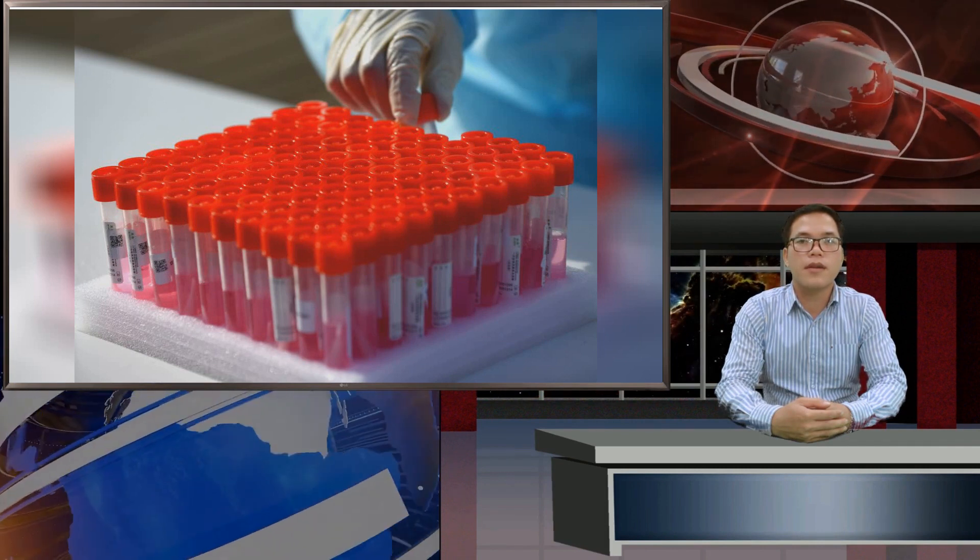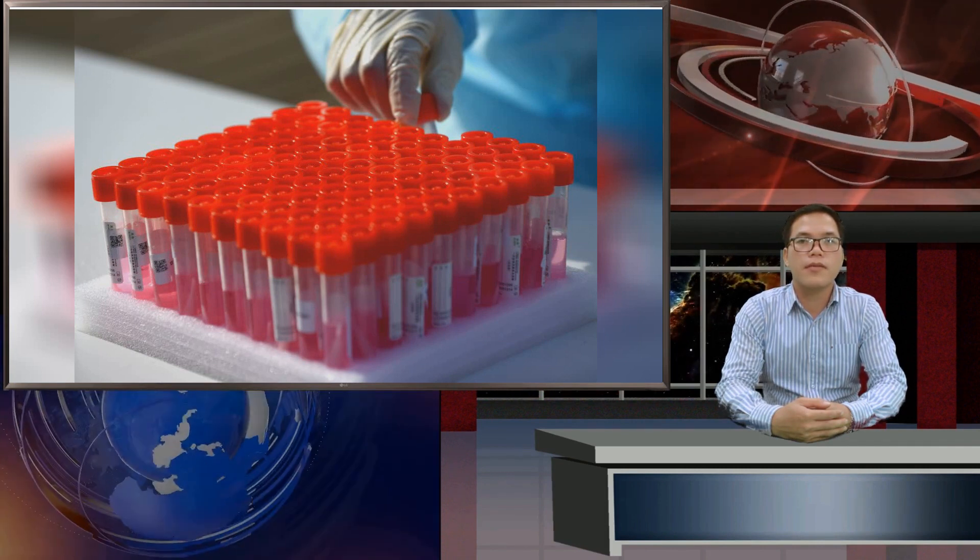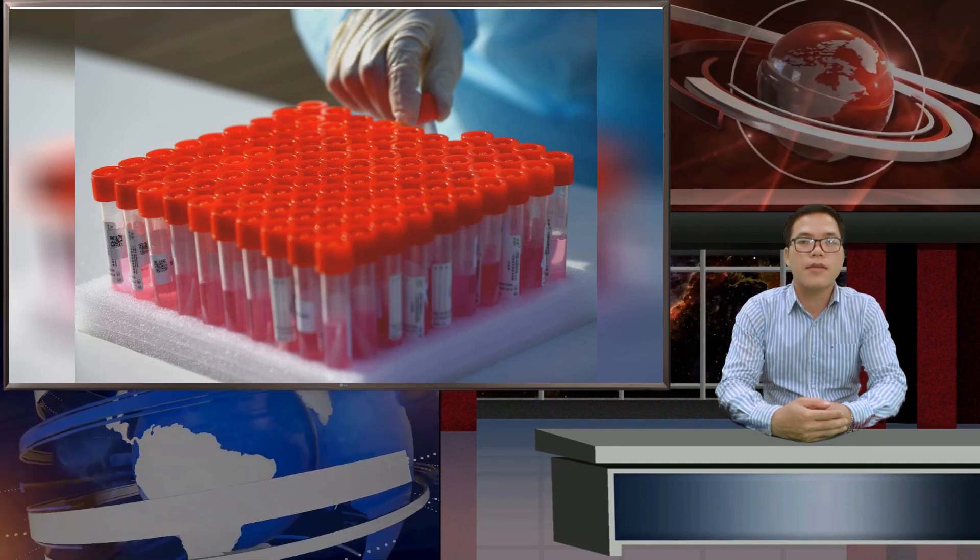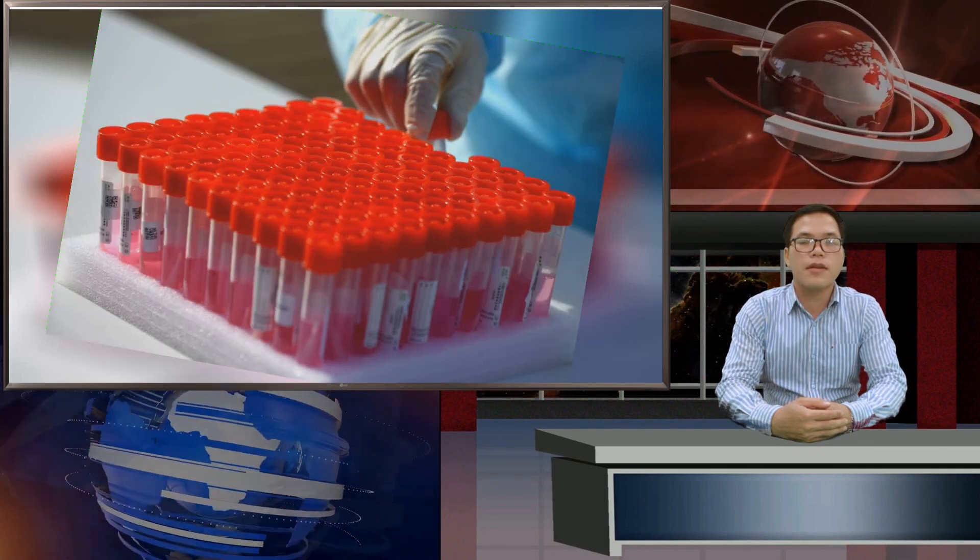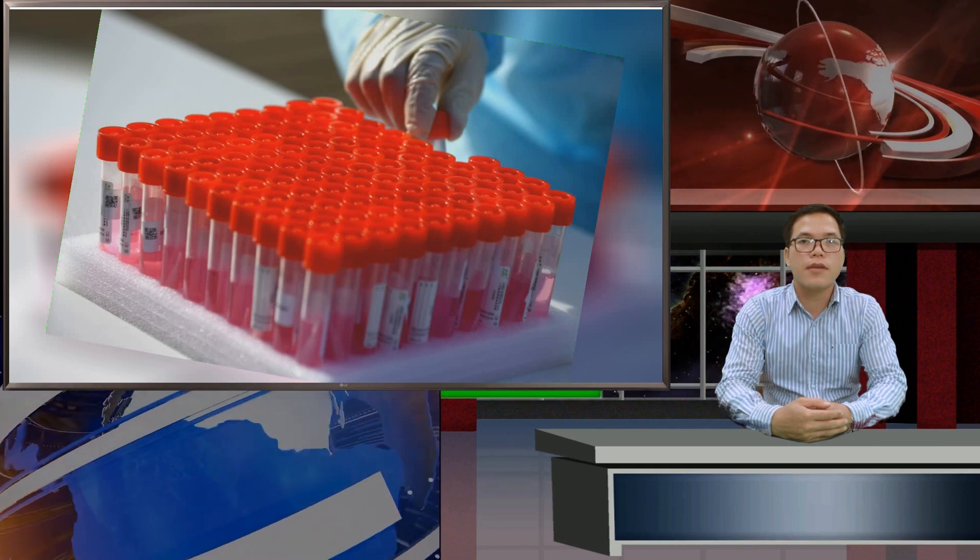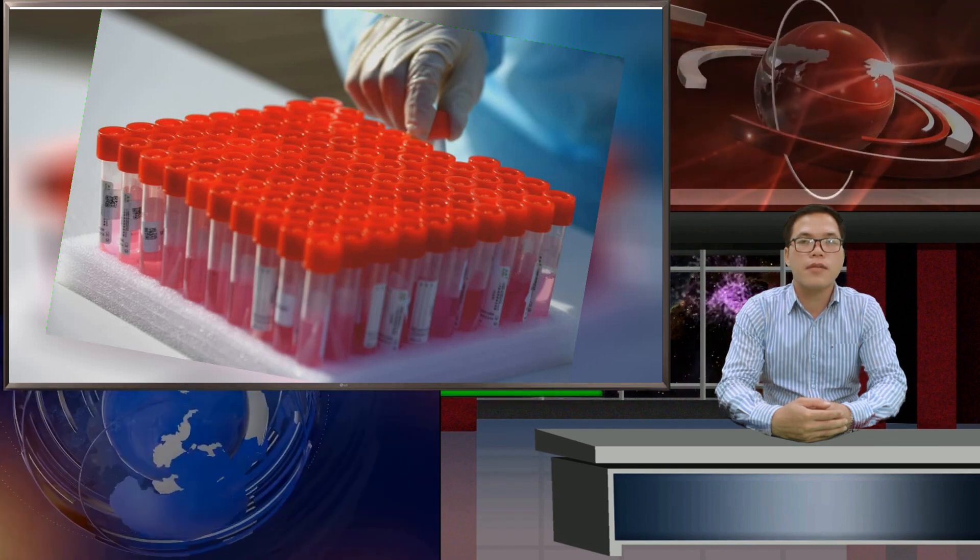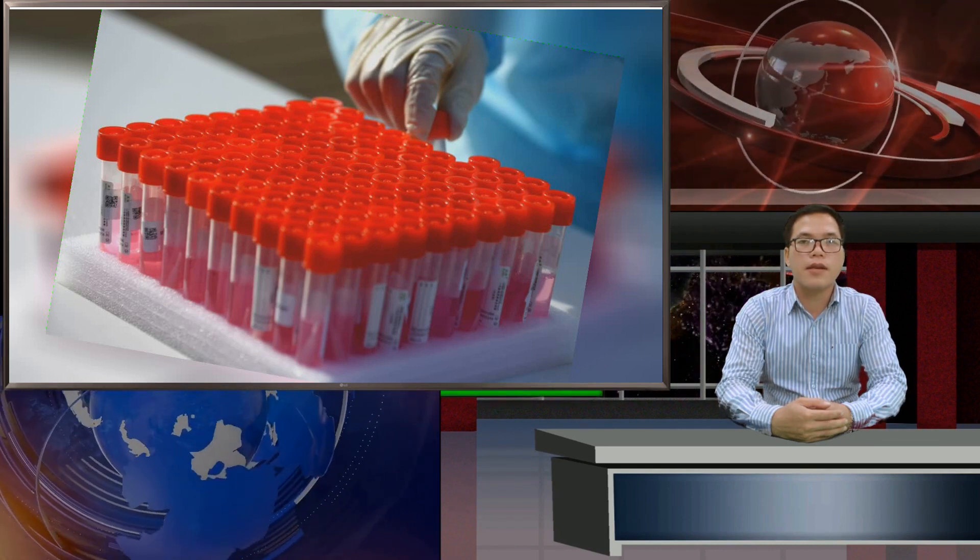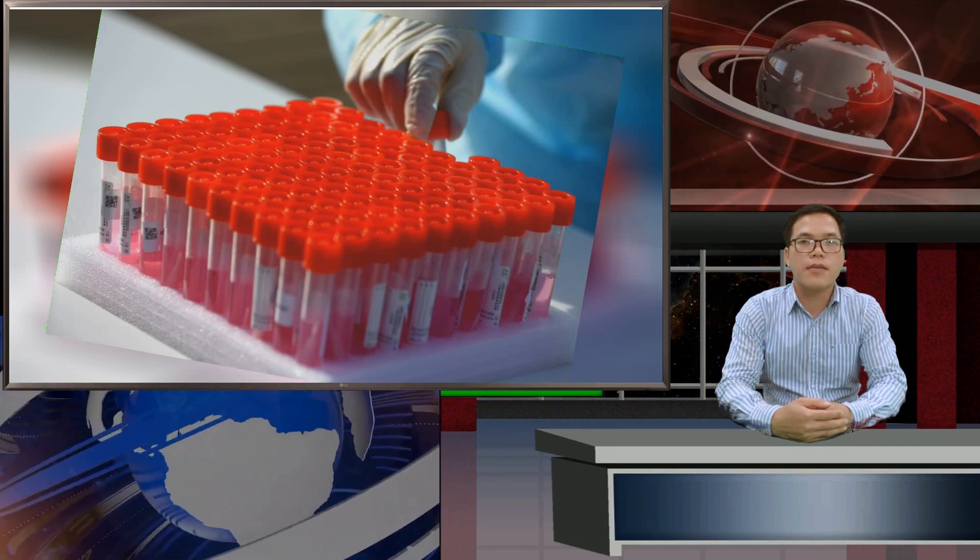The B1.1.7 VOC is currently the dominating known strain at 36,579 variant cases, which is up by 2,467 since the previous day, 104 B1.351 variant cases which is unchanged, and 211 P.1 variant cases which is up by four.